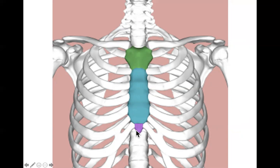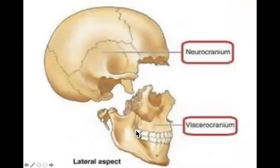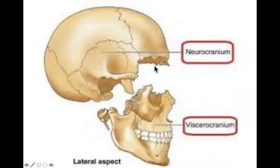Next up is the skull. The skull can be divided into two basic parts: the neurocranium, which encases the brain, and the visceral cranium, which makes up the rest of the face. Both the neurocranium and the visceral cranium have components that form via endochondral bone formation and intramembranous bone formation — you see both types of bone formation on both halves.